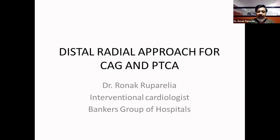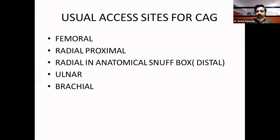In 1958, accidental injection of contrast in right coronary artery by Mason Sons and his associate started the era of coronary angiography. Trans radial approach was started in 1993 by Kimanji, followed by PCI of coronary arteries also in 1993. After that, multiple access sites were available for coronary angiography as well as angioplasty.